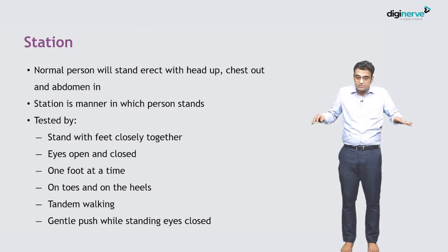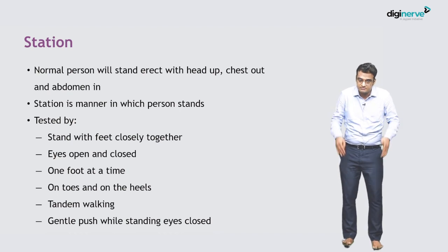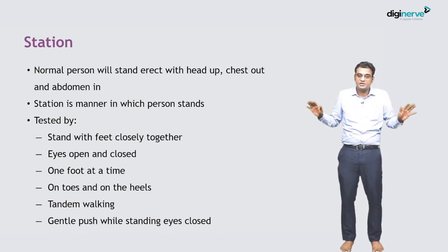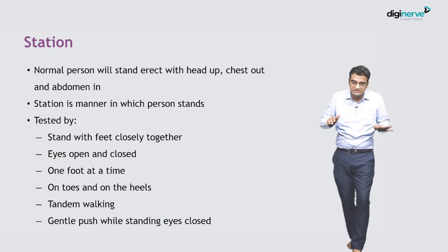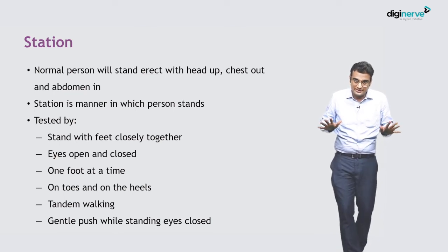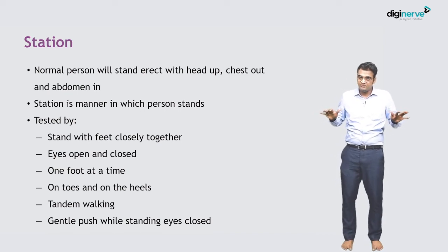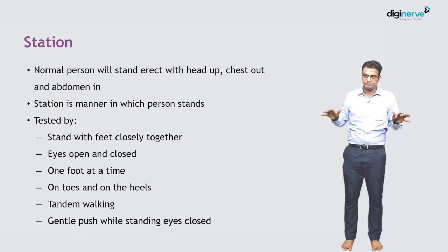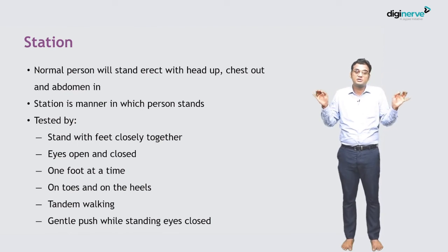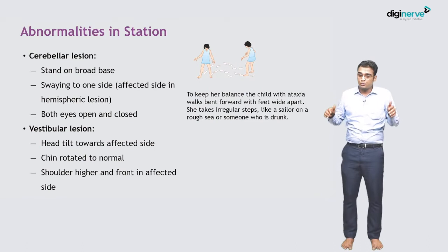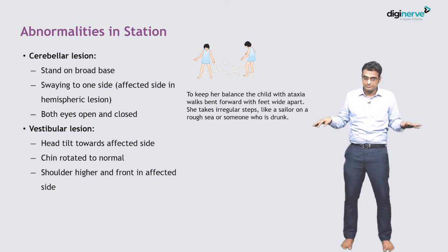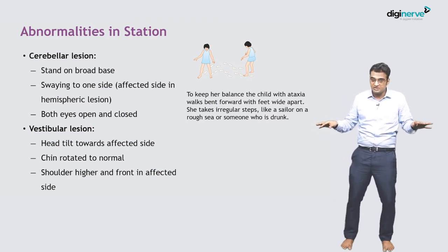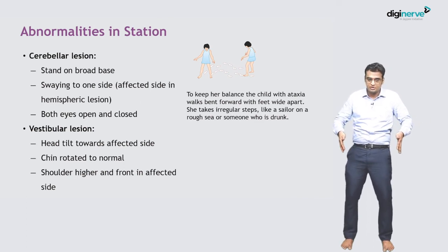Similarly, if there is dorsiflexor weakness the child cannot stand on the heels. If the child has coordination issues, the child will have difficulty in tandem walking. If the patient is ataxic, even with a very gentle push the child is going to fall down. A lot of information can be gathered once you assess the station. If a patient is standing on a broad base, there is something wrong — in cerebellar lesions the child will be standing on a broad base.